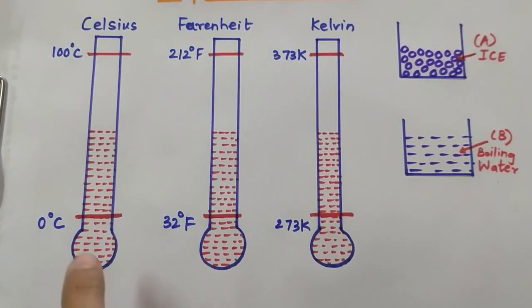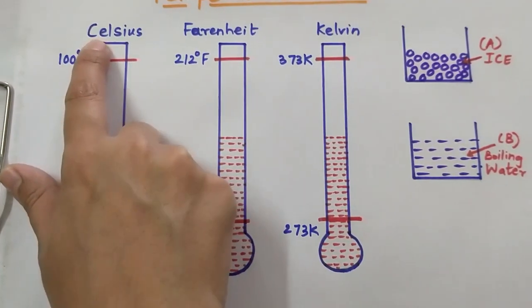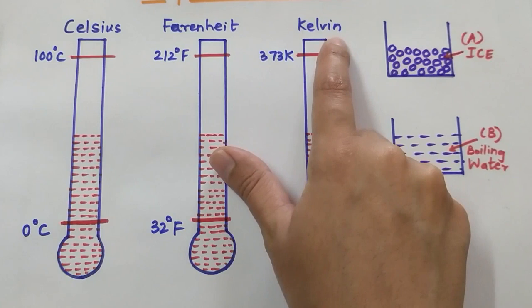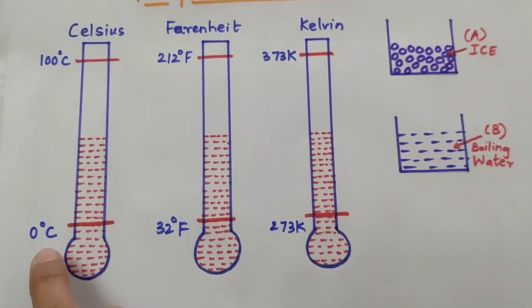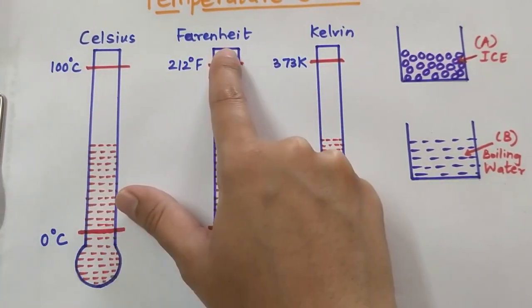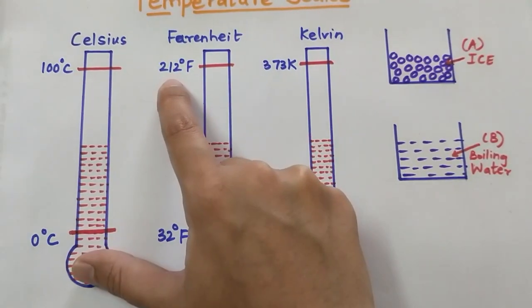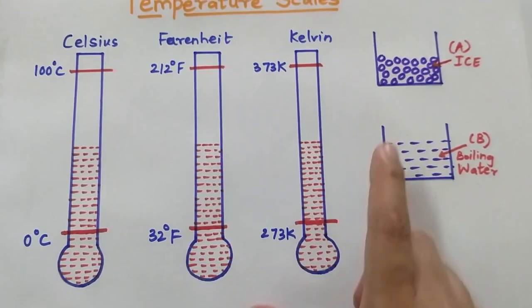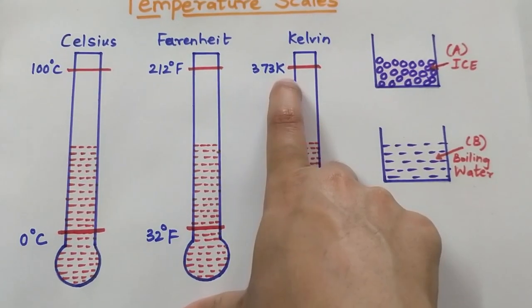So now we have three temperature scales — that is, three thermometers. One thermometer is calibrated in Celsius, another in Fahrenheit, and the third in Kelvin. As per the Celsius scale, the freezing point of water is 0 degree Celsius and the boiling point is 100 degree Celsius. As per the Fahrenheit scale, the freezing point is 32 degree Fahrenheit and the boiling point is 212 degree Fahrenheit. As per the Kelvin scale, the freezing point is 273 Kelvin and the boiling point is 373 Kelvin.